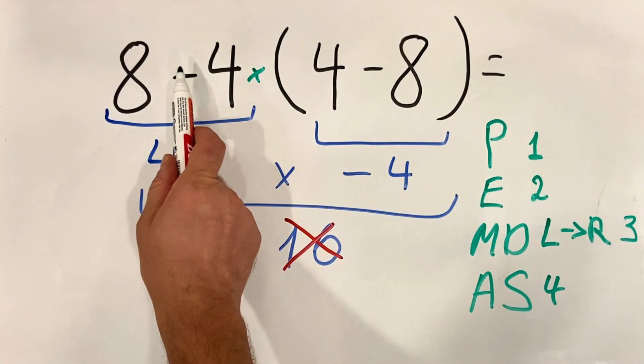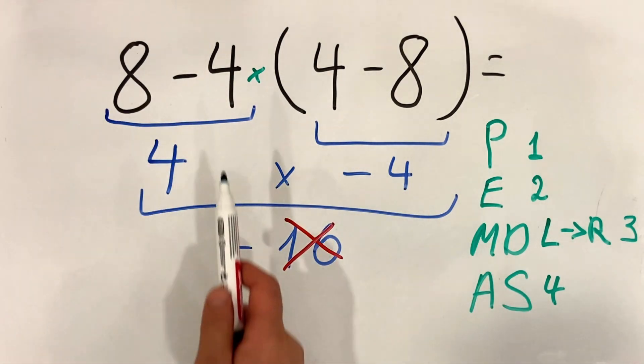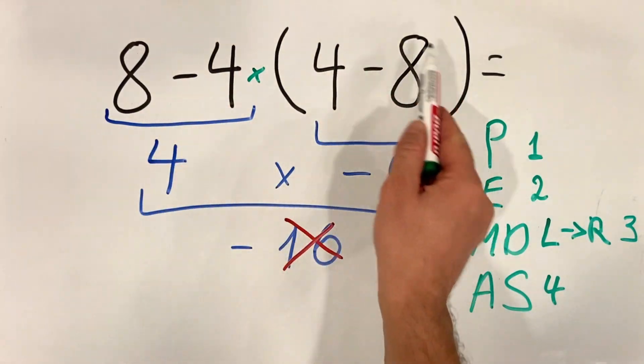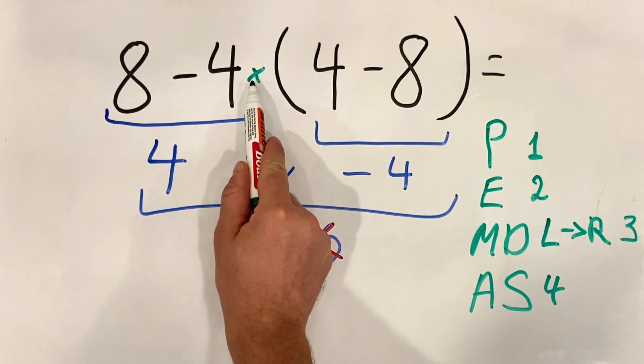And the last one we do subtraction. So we should not start with subtraction and then go from left to right without paying attention to parenthesis and multiplication.